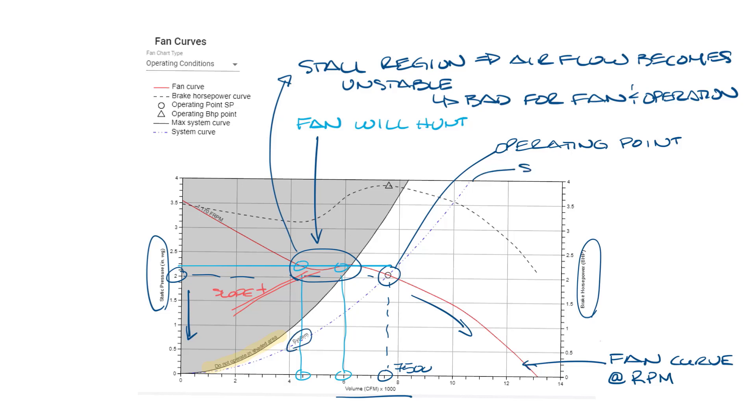This dotted line is the system curve. The system curve is a representation of your system. It's the ductwork and whatever else you need to move the air against. It's important to know that if you change your system, like adding a bunch of extra ductwork or closing off dampers, this changes the system curve and will affect your fan's performance. Changes in your system can shift the system curve left or right.